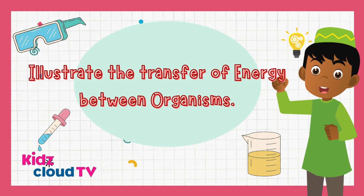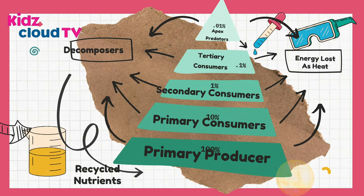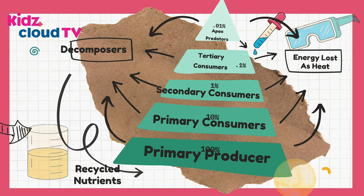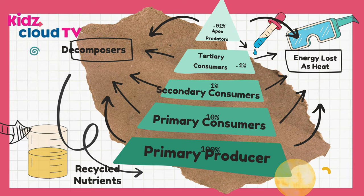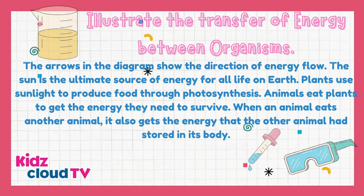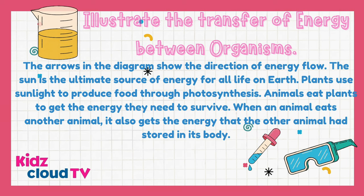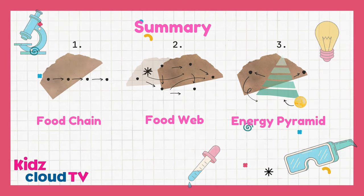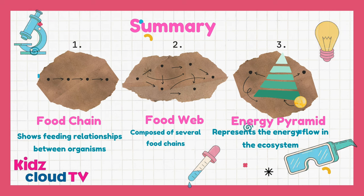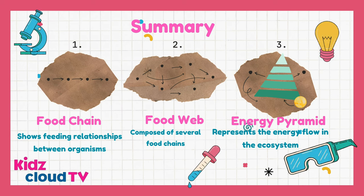Now let's see the transfer of energy between organisms. The arrows in the diagram show the direction of energy flow. The sun is the ultimate source of energy for all life on Earth. Plants use sunlight to produce food through photosynthesis. Animals eat plants to get the energy they need to survive, and when an animal eats another animal, it also gets the energy that the other animal had stored in its body. A food chain shows feeding relationships between organisms; a food web is composed of several food chains; and an energy pyramid represents the energy flow in the ecosystem.